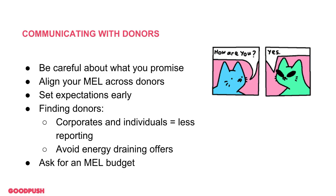As we get closer to the end of the video, just a few notes about communicating with donors about your MEL. First, be careful about what you promise — in Skateistan's experience, it's best to under-promise and over-deliver rather than the opposite. You want to be able to carry out whatever you say you will do. Another useful thing is to try to align all your MEL activities across donors. If you have two different foundations and you say you'll do an annual survey, don't tell one you'll do it in June and another in December — be organized so you can do the same survey and share it with both.